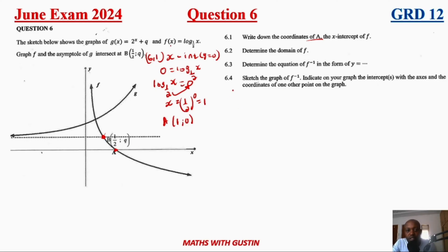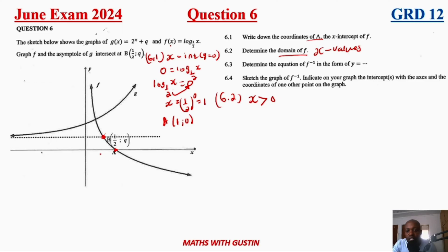Question 6.2 asks us to determine the domain. The domain refers to the x-values — on which values of x does this graph exist? Only when x is greater than zero. As you can see from the graph, from zero going right, this graph is available. So the domain is x greater than zero.